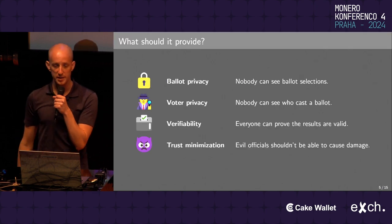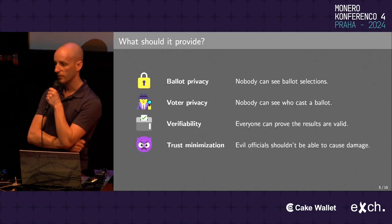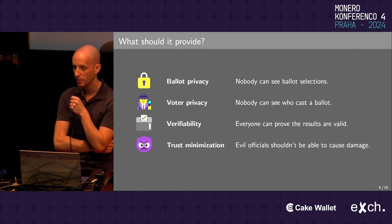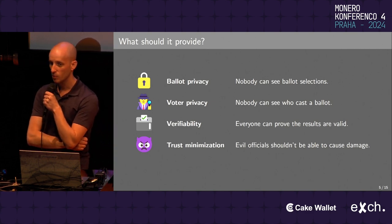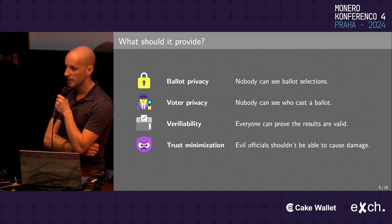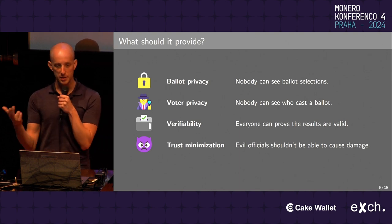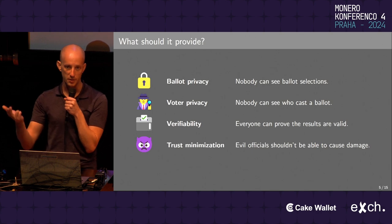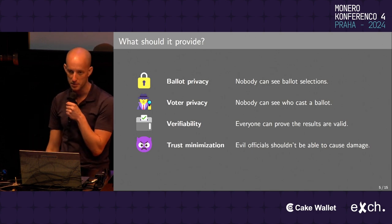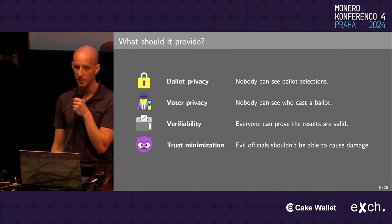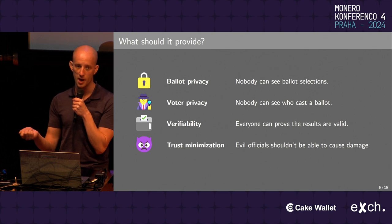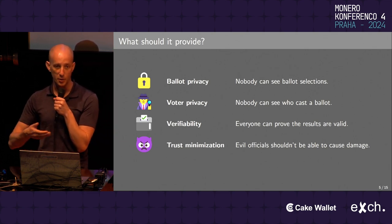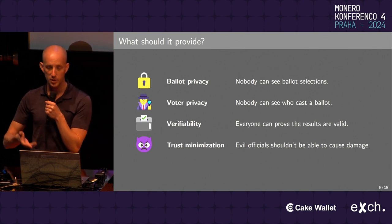Let's look at what a digital voting system might provide — four big goals. The first is ballot privacy: if you look at a ballot on a digital ledger, such as a blockchain, nobody should be able to see which candidates or options that ballot selected. That reveals a lot of information and could influence results as voting occurs.